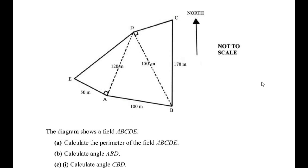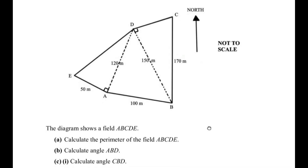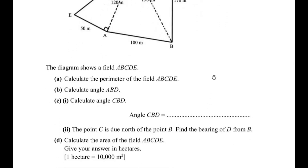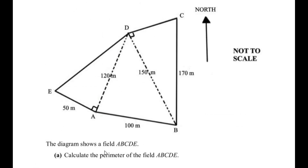Hello and welcome to my channel. In this video we are going to solve an example which is a combination of mensuration and trigonometry chapters. This question has four sub-questions, and sub-question C is again divided into two parts. Let us start with the A question first. The diagram shows a field ABCDE. Calculate the perimeter of the field ABCDE.